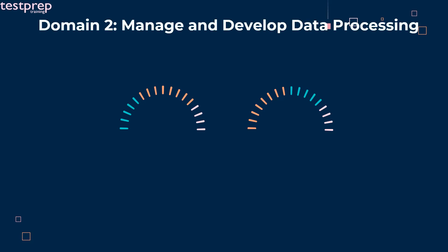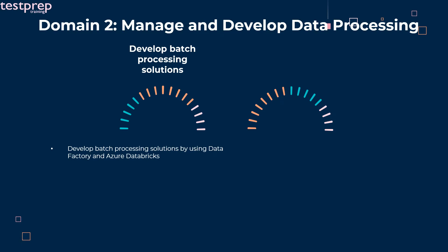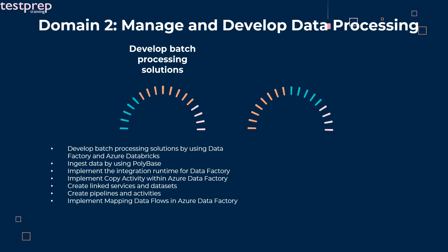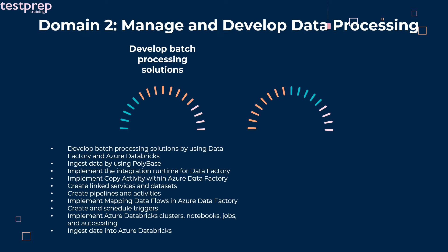Second major section: manage and develop data processing. Number one: develop batch processing solutions. It contains ten subtopics. First, develop batch processing solutions using Data Factory and Azure Databricks. Second, ingest data using Polybase. Third, implement the integration runtime for Data Factory. Fourth, implement copy activity within Azure Data Factory. Fifth, create linked services and datasets. Sixth, create pipelines and activities. Seventh, implement mapping data flows in Azure Data Factory. Eighth, create and schedule triggers. Ninth, implement Azure Databricks clusters, notebooks, jobs, and auto-scaling. Tenth, ingest data into Azure Databricks.